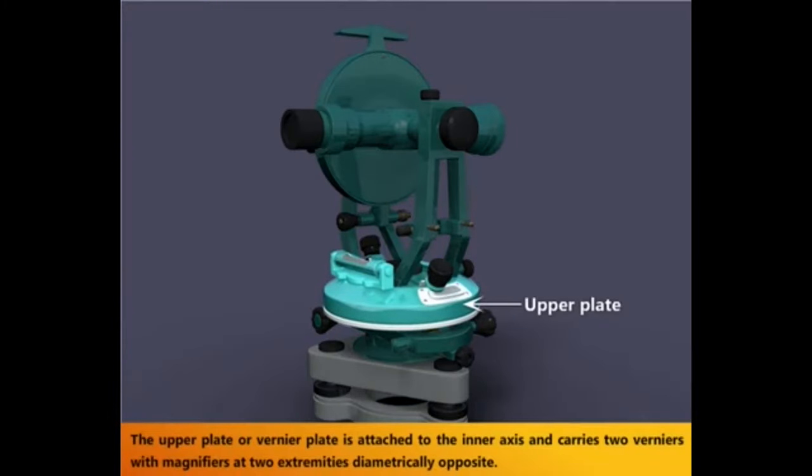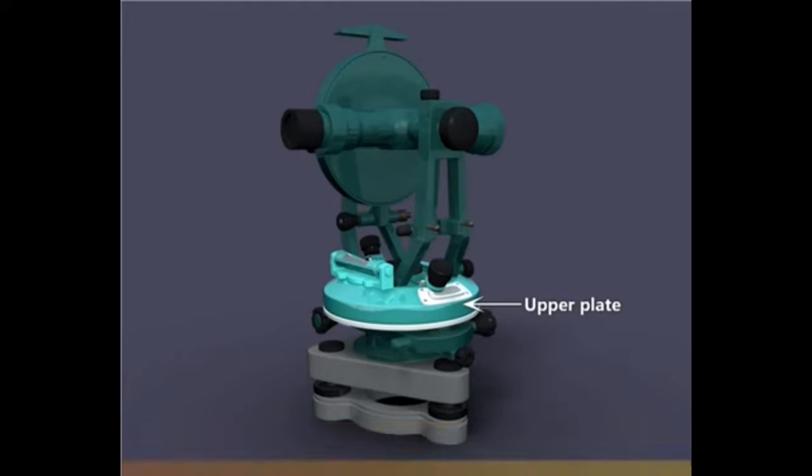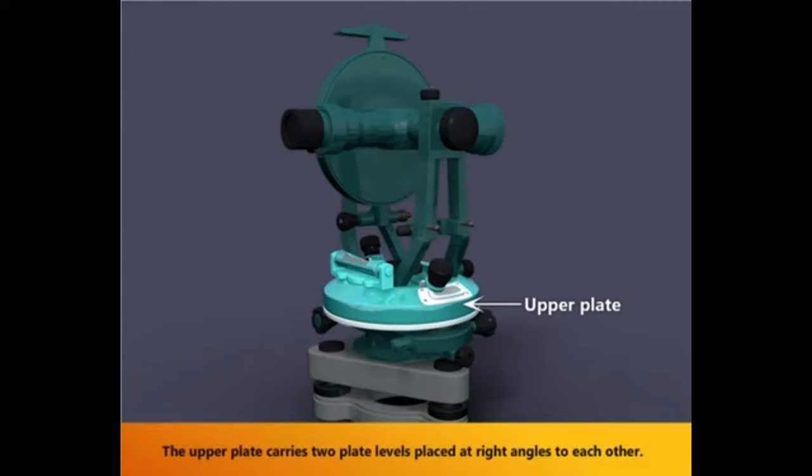The upper plate or vernier plate is attached to the inner axis and carries two verniers with magnifiers at two extremities diametrically opposite. The upper plate carries two plate levels placed at right angles to each other.